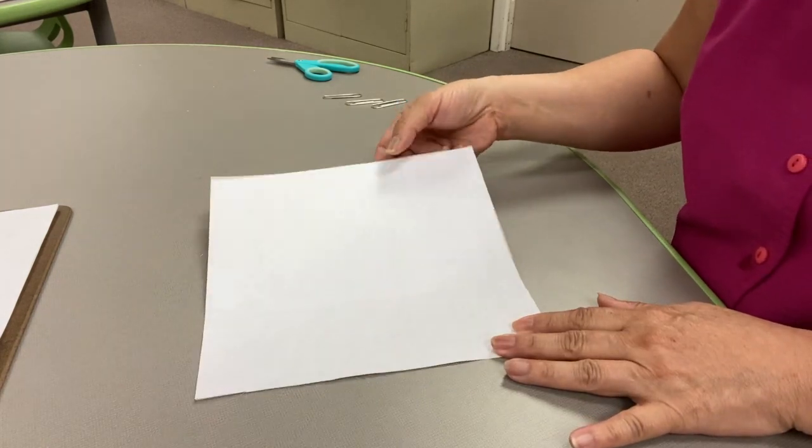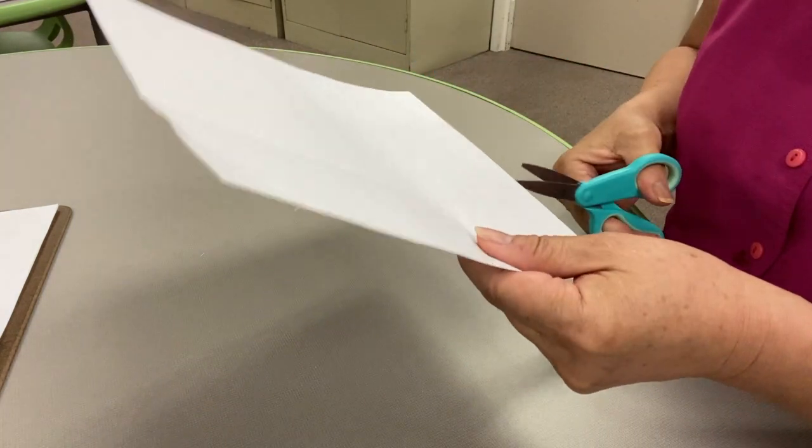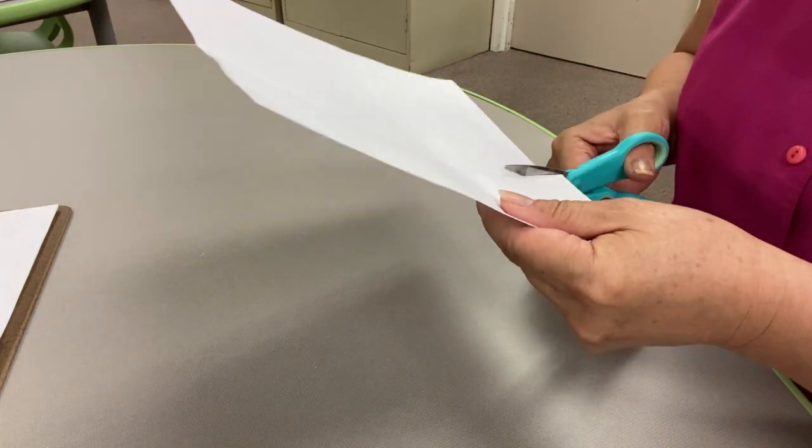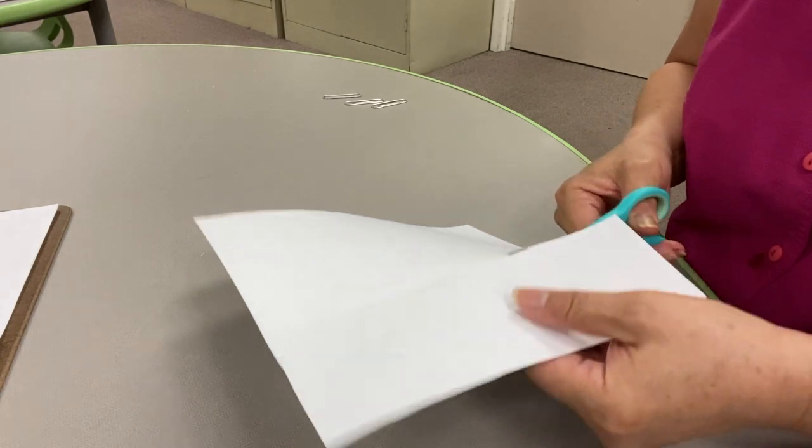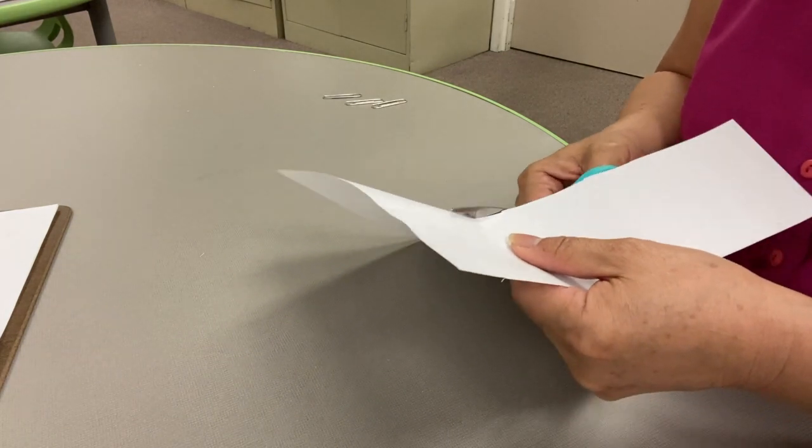Next, we will be making another twirlybird, except this time we're going to be changing some of the variables. So let's go ahead and cut the next fold.